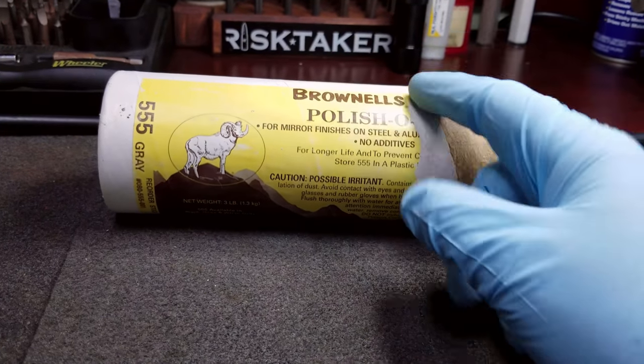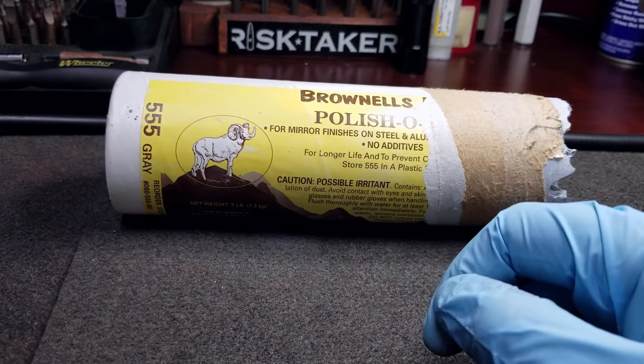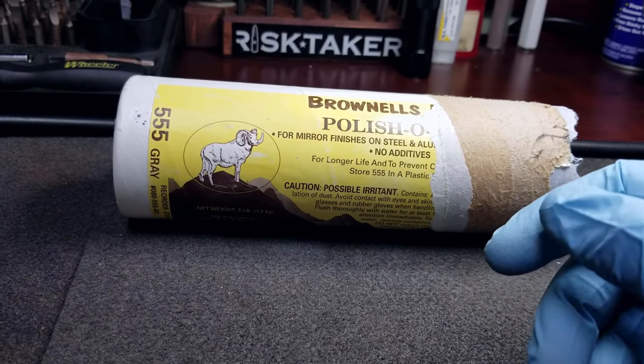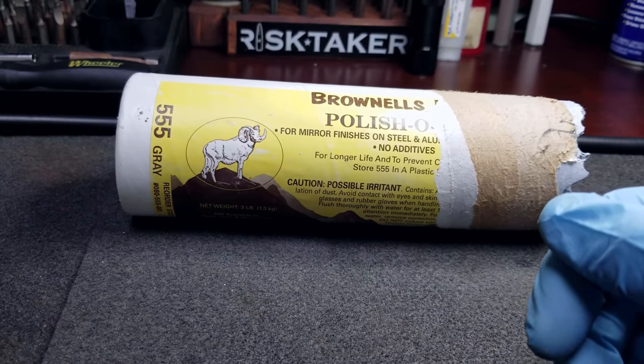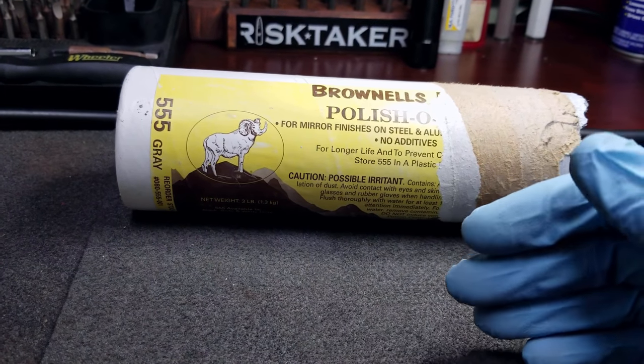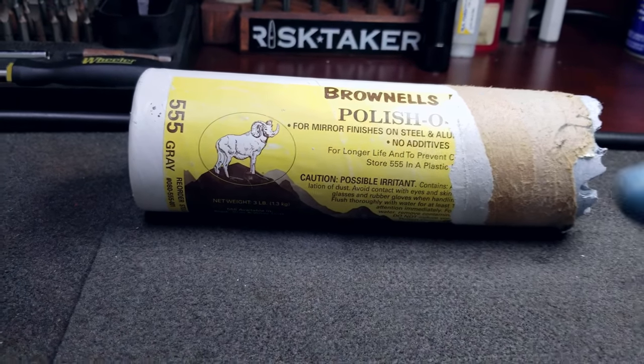In my experience, the best results I've ever gotten with polishing feed ramps and small internal parts on firearms has been the Polishing Array 555. This compound isn't very abrasive, it just gives you a nice polish on the surface and it gives one of the best results. For this video we're going to be using the Polishing Array 555.